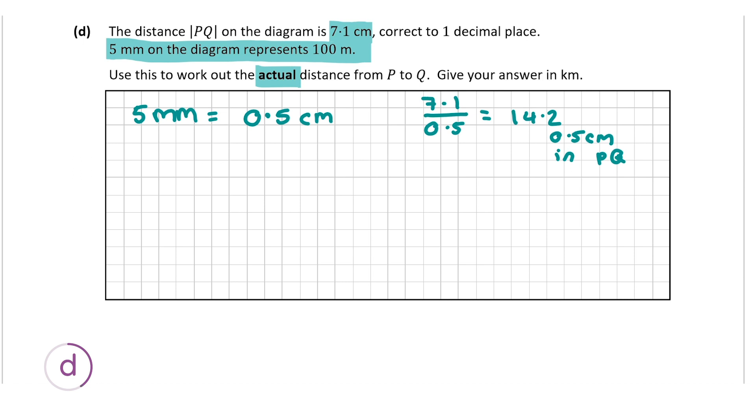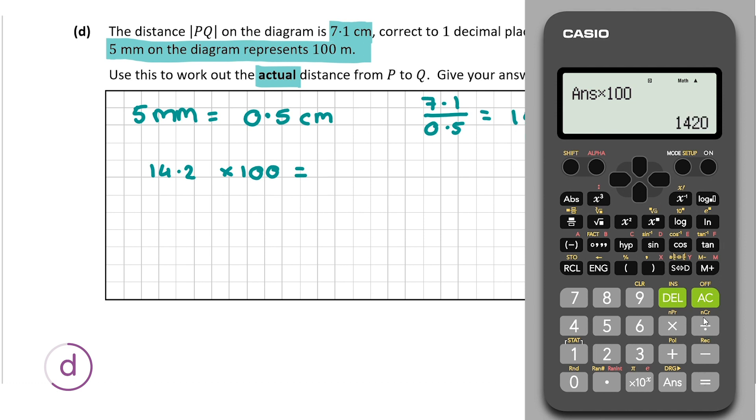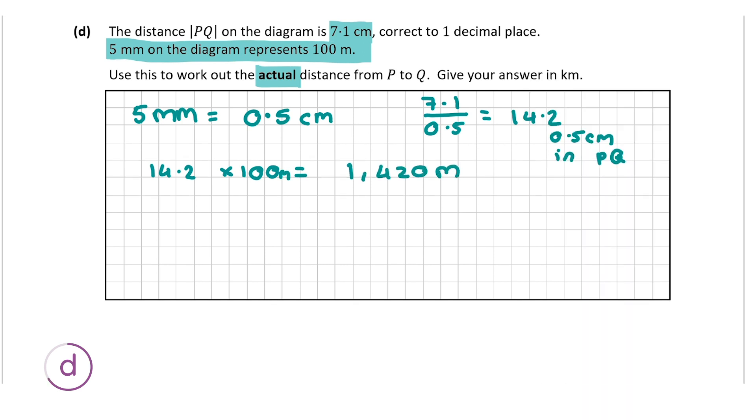So if there's 14.2 0.5 centimeters, that means that in real life, there's 14.2 × 100 meters because 5 millimeters represents 100 meters. So we're going to multiply 14.2 by 100. And that will give us 1420 meters. So we're multiplying by 100 meters. But it asks us to give our answer in kilometers. So make sure you don't miss this part of the question. So to convert from meters into kilometers, we divide it by 1000. So it's going to be 1.420 kilometers. So that's our final answer. And for this question, you are going to get a total of 5 marks.